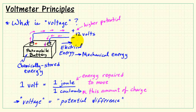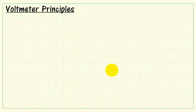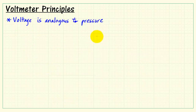It's also referred to as potential difference. We say one end — the positive terminal — is at higher potential, and the negative end is at lower potential. So again, we need a potential difference in order to drive current.